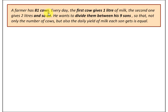The farmer has 9 sons, amongst whom he wants to divide his cattle so that each one gets not only the same number of cows but also the same milk output per day.